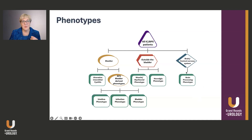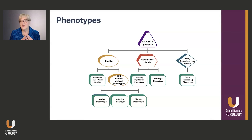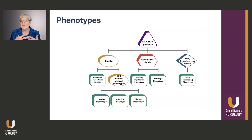Lastly, we have the brain or central sensitization phenotype. This is where symptoms are amplified by changes in the central nervous system, and it's often associated with other chronic overlapping pain conditions — things like irritable bowel syndrome, fibromyalgia, vulvodynia, and even TMJ. Phenotyping has been instrumental in guiding much more focused research, and it allows us to target what is felt to be the root cause of symptoms.